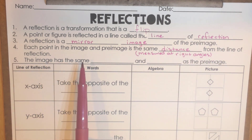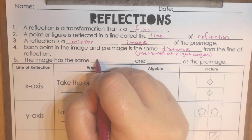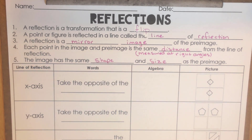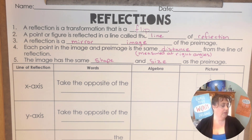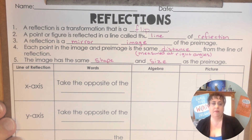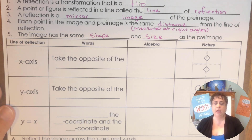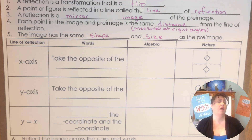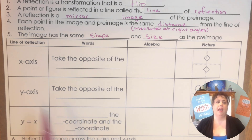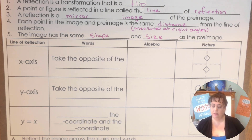The image has the same shape and size as the pre-image. Shape and size means that it is congruent, so reflections are going to be congruent. Let's look at some information about lines of reflection: the X-axis, Y-axis, and Y equals X. Those are going to be our major lines of reflection. We can have other ones, and when you get into high school you will be working with those, but for now we're going to deal with these three.